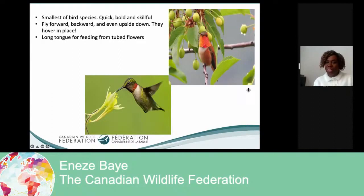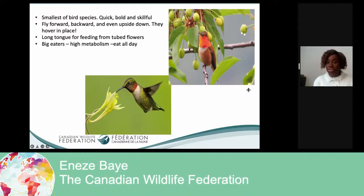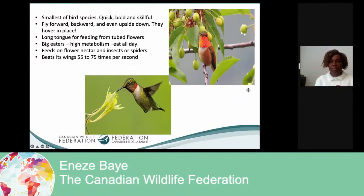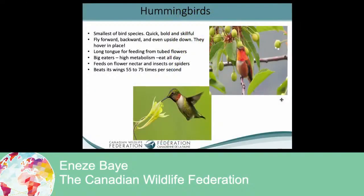Hummingbirds are another pollinator in Canada. We have five species of hummingbirds in Canada — just five of them. They are the smallest of birds, very quick, bold, and skillful. They can eat all day! They love to feed on nectar as well as insects or spiders, which gives them nutrients. Another cool thing about hummingbirds is that they can flap their wings 55 to 75 times per second. I can't imagine doing that — that's quite a lot!